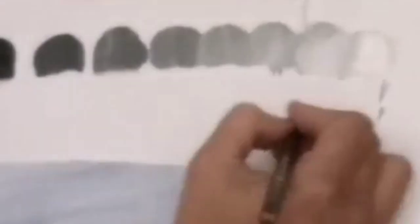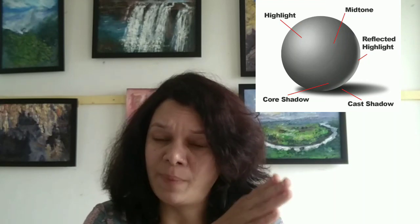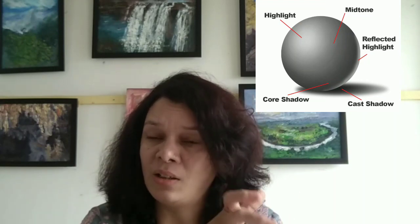We mainly use values for two things. First, to convert our 2D object into a 3D object on 2D paper. For example, this ball — when we give shadow to it, it becomes 3D. So we use shadow, light and dark tones to convert a 2D object into 3D. Second, we use values or tones to create design patterns.